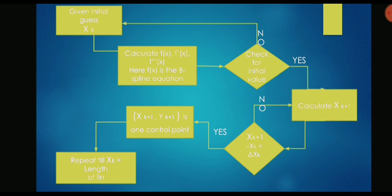Once I have a reasonable approximation of whether the control point is approximately at the exact location then I can stop doing these iterations. Then x of k plus one and y of k plus one is going to be one control point. Now repeat this till xk is equal to length of fin.